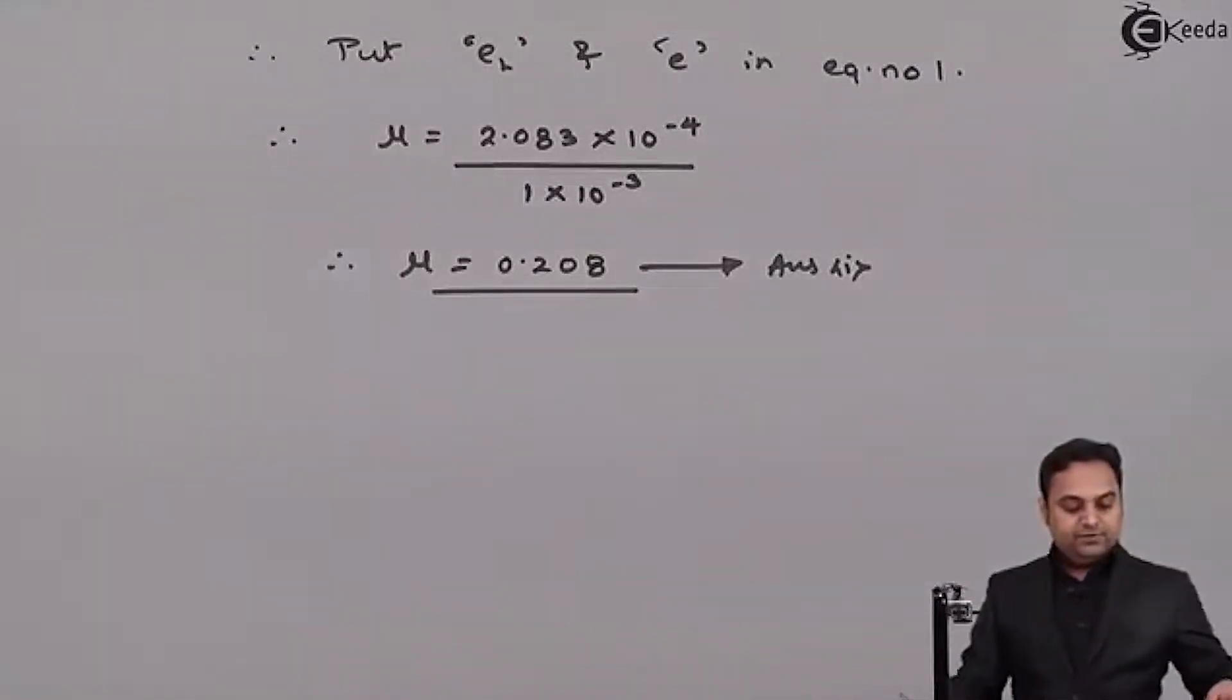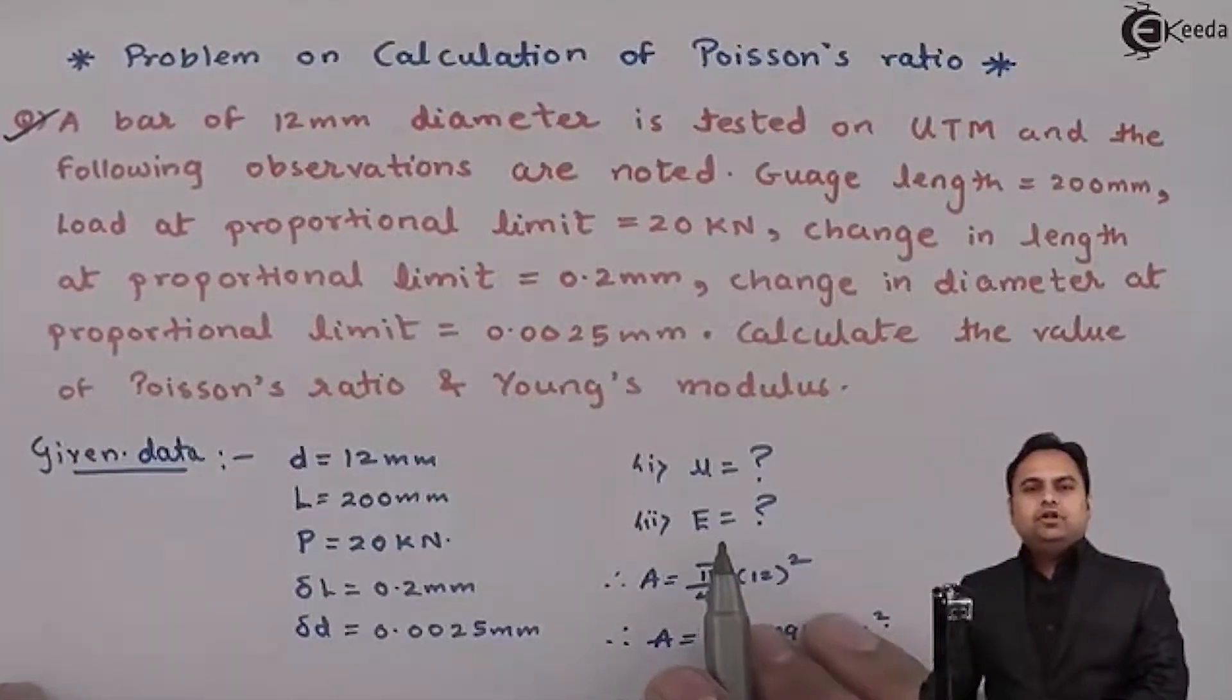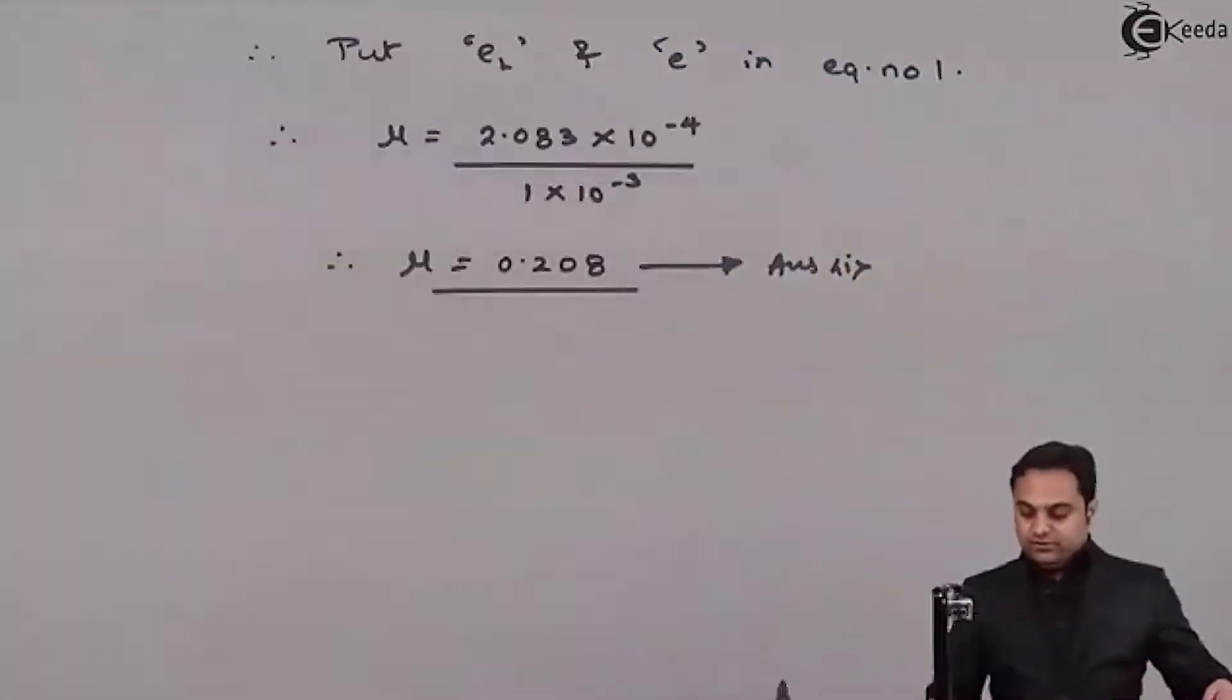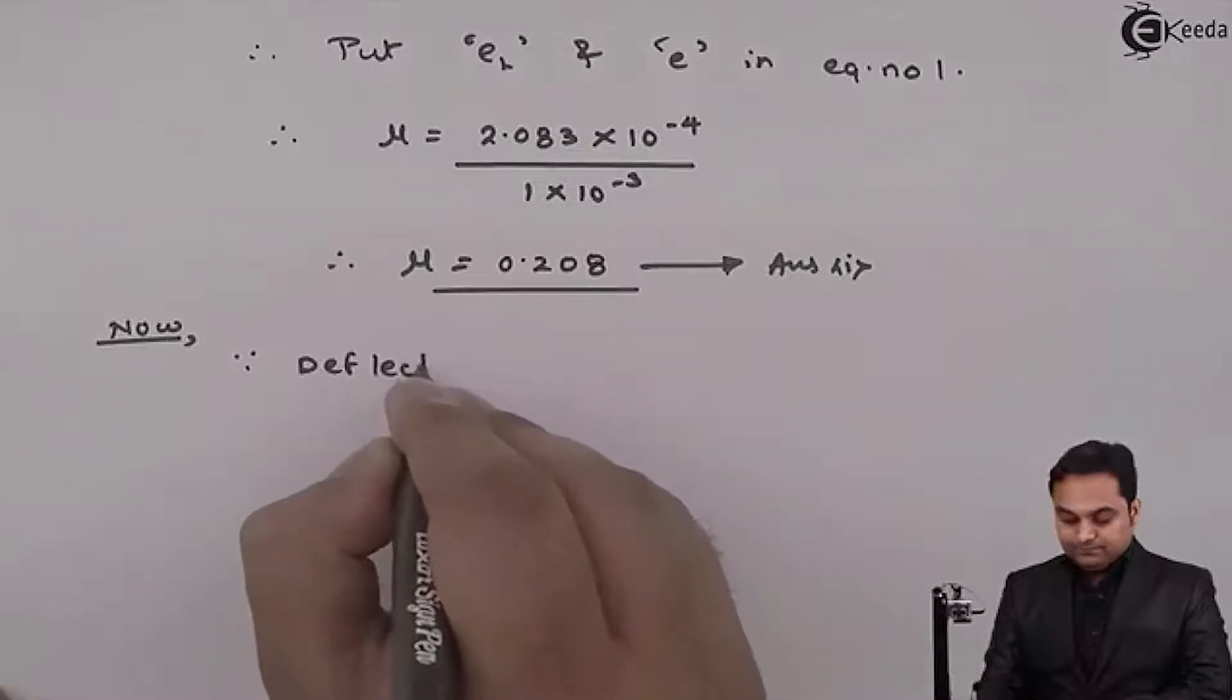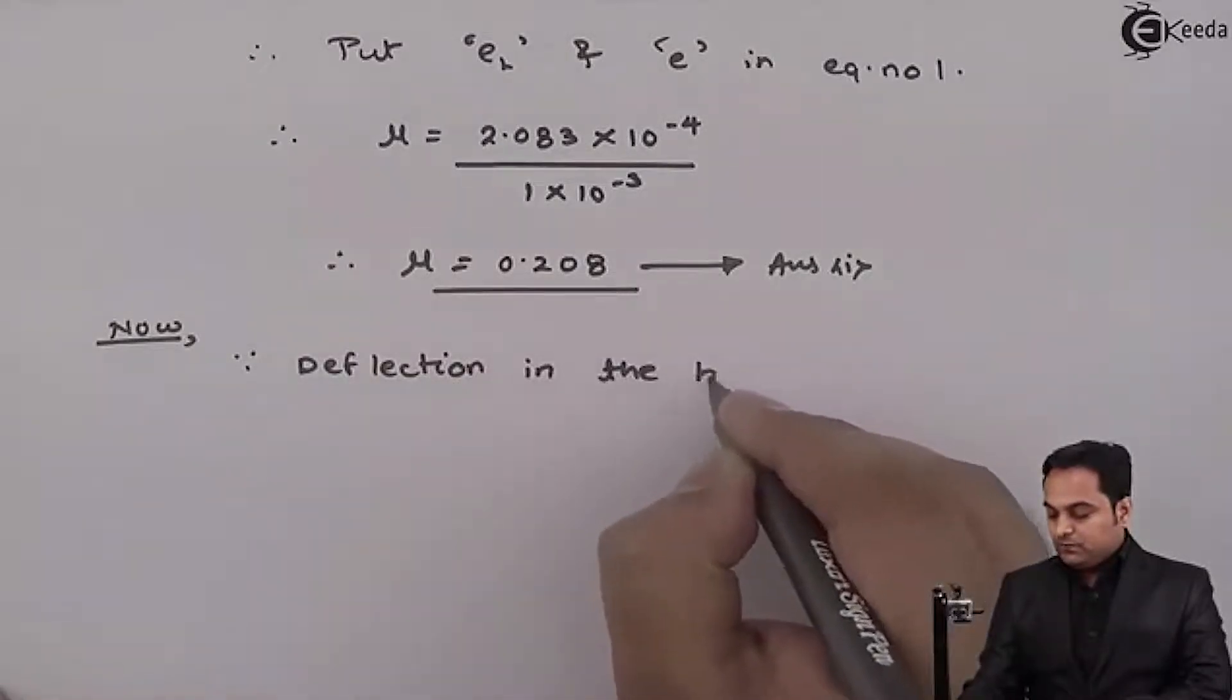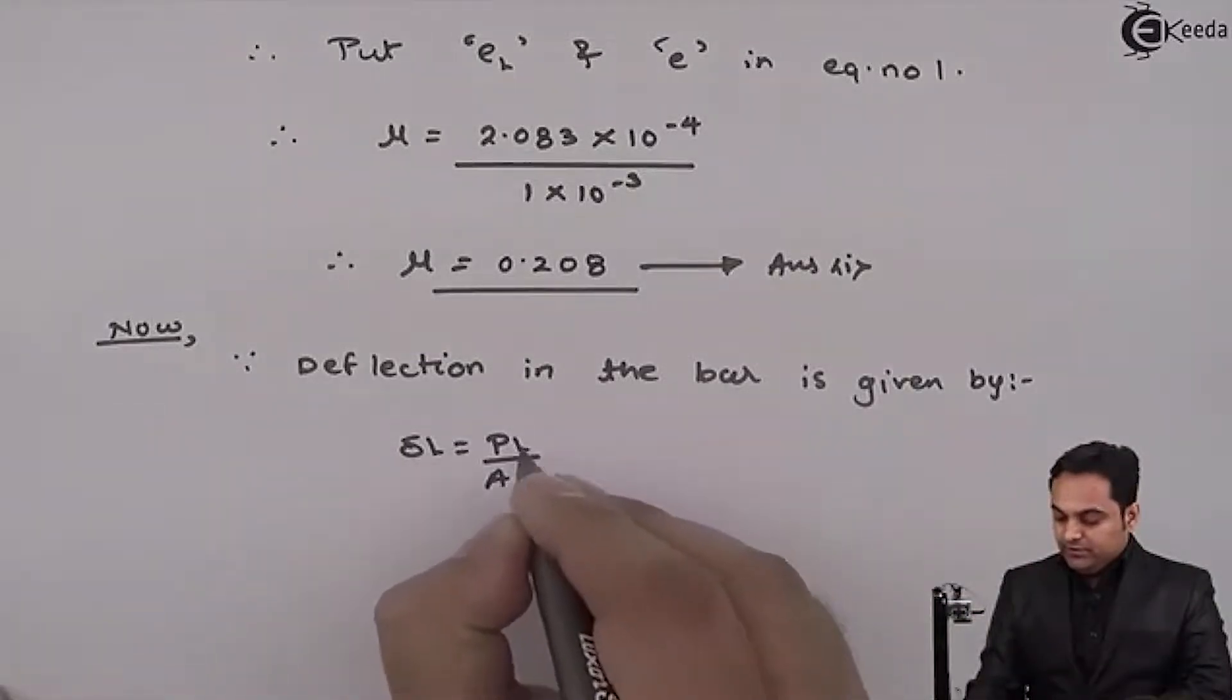Next after getting Poisson's ratio, the second question is to calculate modulus of elasticity. Now modulus of elasticity we will get it in the formula of delta L which is deflection. Since deflection in the bar is given by delta L equals PL upon AE.